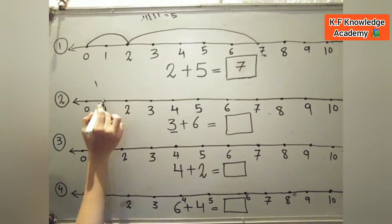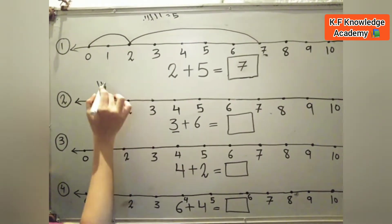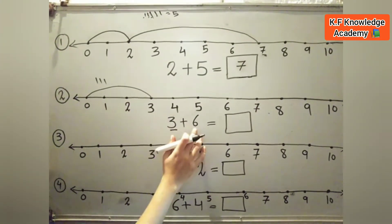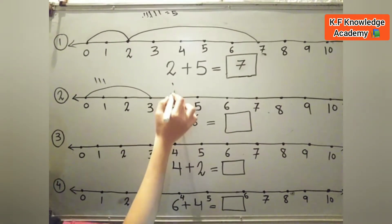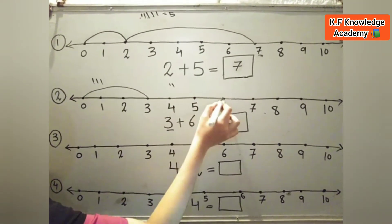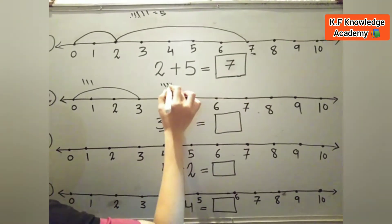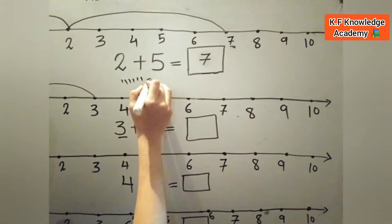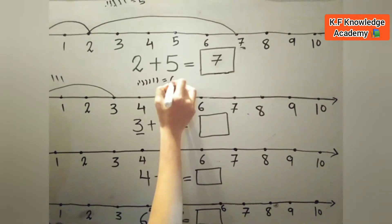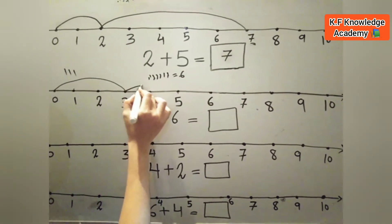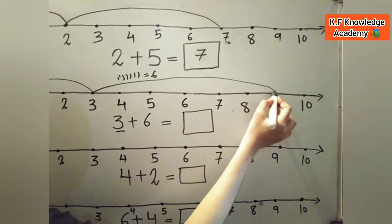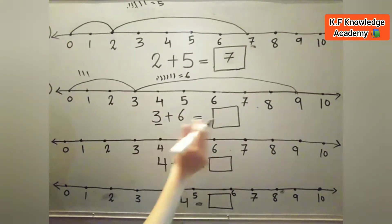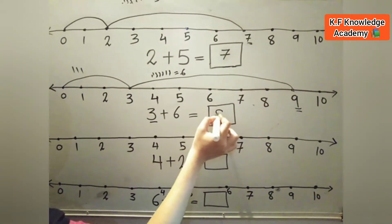Next one is 3 plus 6 is equal to. So we match 0 to 3 numbers, then we count 6 numbers: 3 to 4 is 1, then 2, 3, 4, 5, and 6. So we match 3 to 9 — it means 3 plus 6 is equal to 9. So we write 9 in the box.